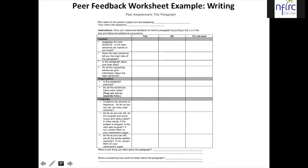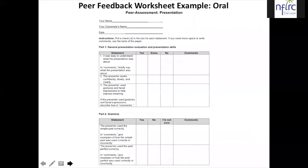Here you'll notice, looking at this written peer feedback sheet, there are specific phrases tied to learning objectives found on the left-hand side. The first bullet asks learners to identify specific information in the peer's assignment — here they have to underline the topic sentence in their partner's paper. Then it asks if the topic sentence is too narrow or too broad, with a scale of yes, no, or I'm not sure. It would have been helpful if the teacher had also included a comment space where students could indicate whether the topic sentence was too narrow or too broad, to provide more helpful feedback to their peers. There is also an example of an oral peer feedback worksheet included in the presentation.